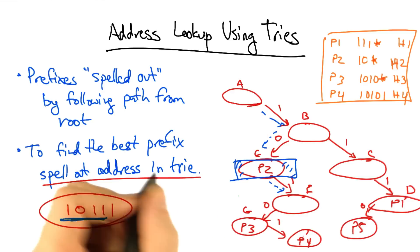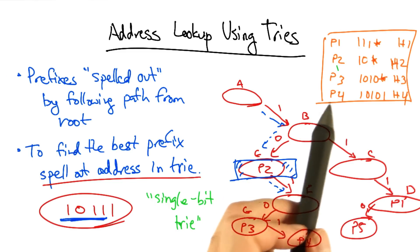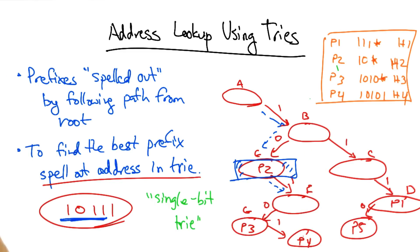Now this structure here is what's called a single-bit trie. Single-bit tries are very efficient. Note that every node in this trie exists due to one of the five forwarding table entries that we've inserted in the trie.